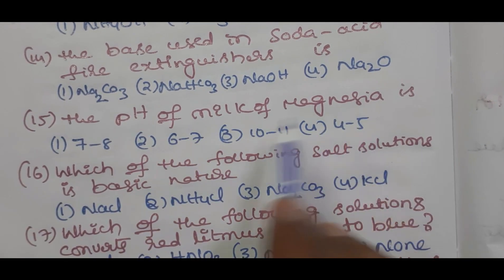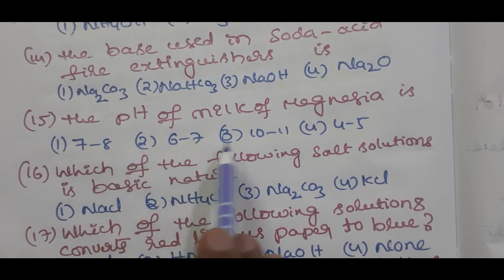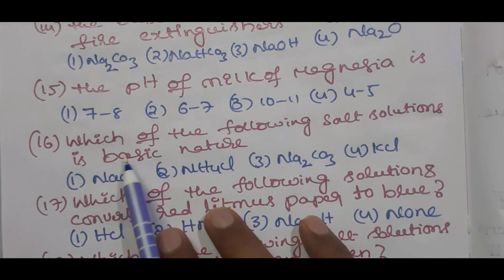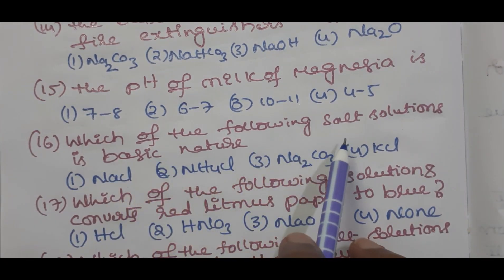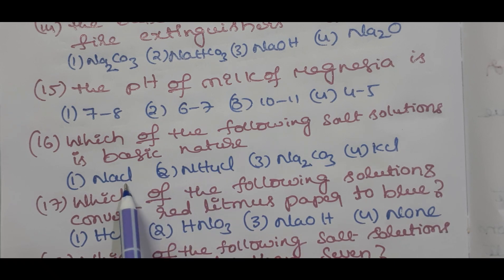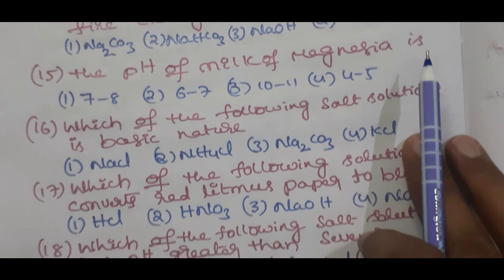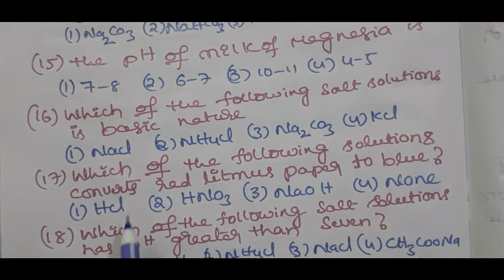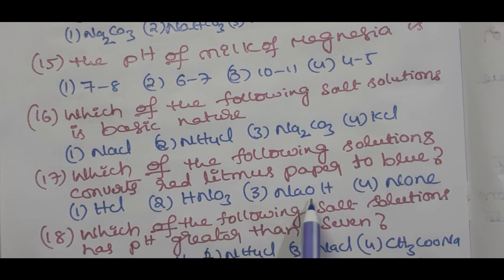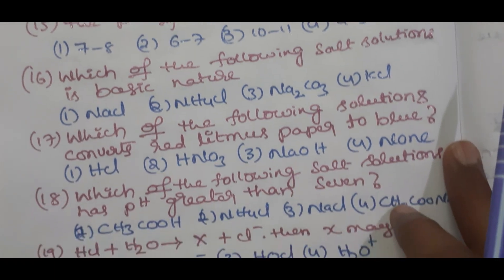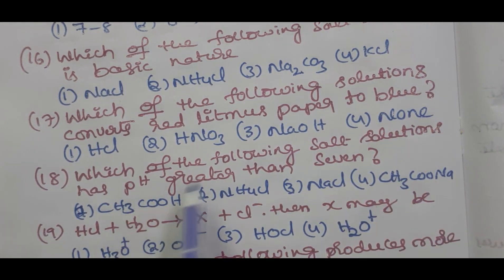Question number 15 students: the pH value of milk of magnesia is 7 to 8, 6 to 7, 10 to 11, 4 to 5. Question number 16 students: which of the following salt solutions is basic in nature - NaCl, NH4Cl, Na2CO3, KCl? Question number 17 students: which of the following solutions converts red litmus paper to blue - HCl, HNO3, NaOH, none of these?